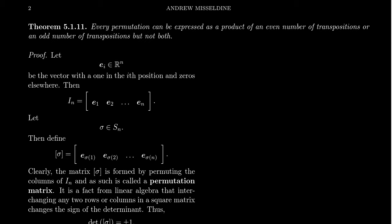Let's see the proof of Theorem 5.1.11: every permutation can be expressed as a product of an even number of transpositions or an odd number of transpositions, but not both. That last statement — 'not both' — is critical, because if you omitted it, this would be obvious: the number of transpositions has to be a natural number, and every natural number is either even or odd. So we do need that 'not both' part.